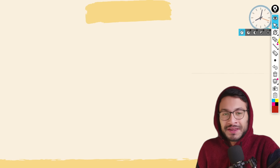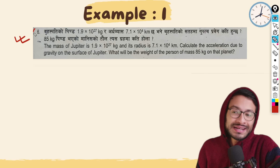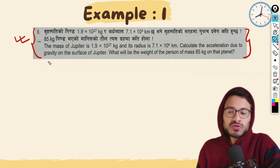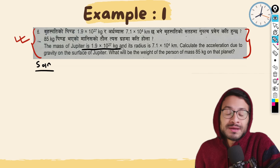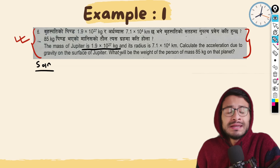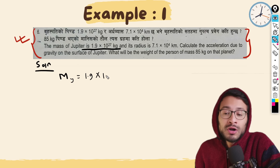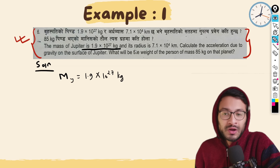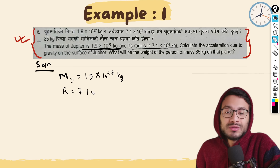So you can see the question from the book on unit gravity and gravitational force, chapter 2. This is a repeated question. The mass of Jupiter is 1.9 into 10 to the power 27 kg, and its radius is 7.1 into 10 to the power 4 km.